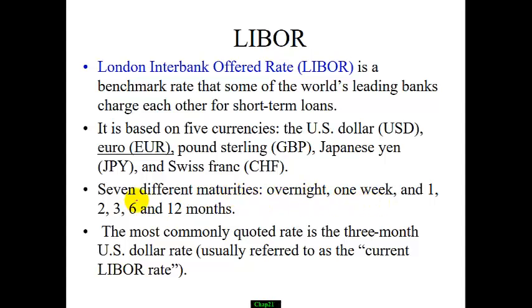The seven LIBOR maturities are: overnight, one week, and one, two, three, six, and twelve months. The most commonly used, though, is the three-month US dollar rate, typically referred to as the current LIBOR rate.